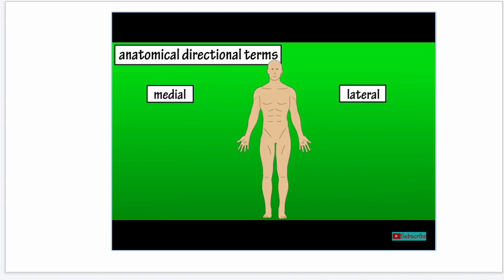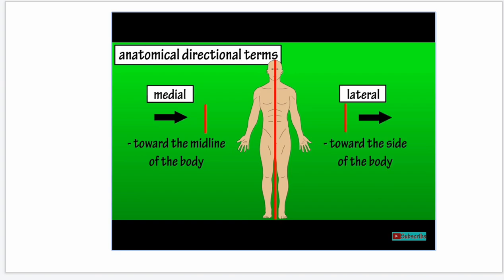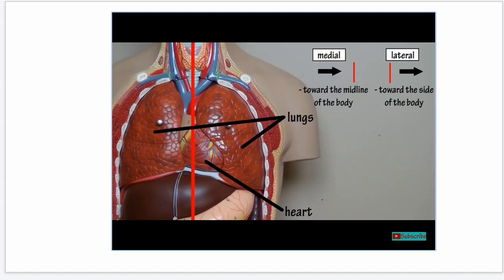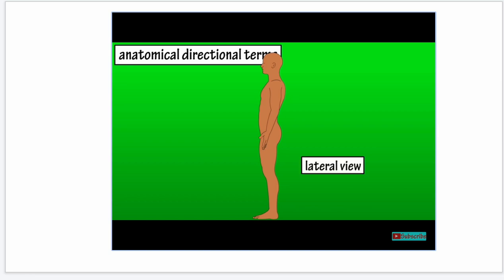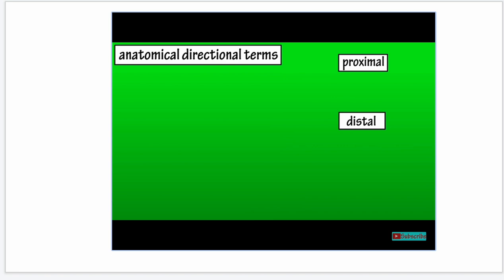Medial and lateral are another set of directional terms. Medial means toward the midline of the body, and lateral means toward the side of the body or away from the midline, where the midline is an imaginary line that divides the body into left and right halves. We would say the heart lies medial to the lungs, or the lungs lie lateral to the heart. Lateral can also describe how you're viewing the body from the side.